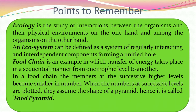Quick recap: Ecology is the study of interactions between organisms and their physical environment. An ecosystem is a system of regularly interacting and interdependent components forming a unified whole. A food chain is an example in which transfer of energy takes place in a sequential manner from one trophic level to another. Members at successive higher levels become smaller in number, and when plotted they assume the shape of a pyramid — hence called a food pyramid.